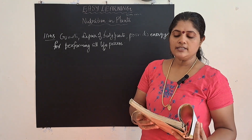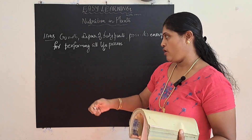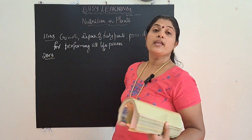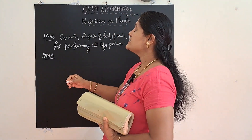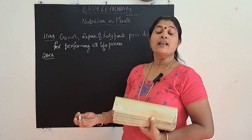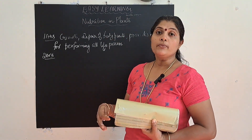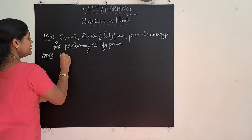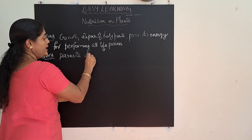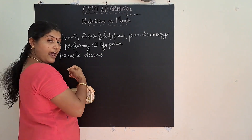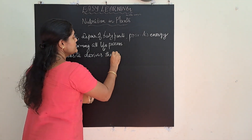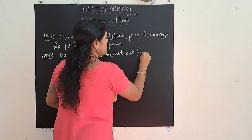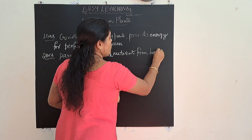The second question is: distinguish between a parasite and a saprotroph. Regarding the parasite — a parasite is an organism which derives nutrients from a host. It derives the nutrients from the host.